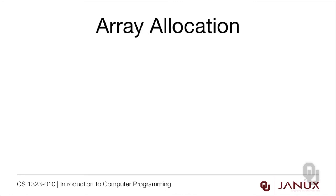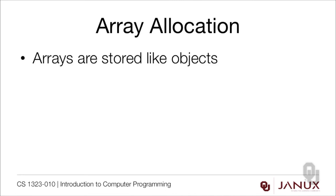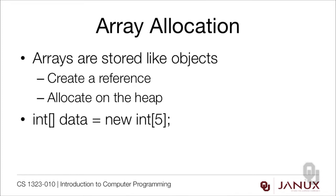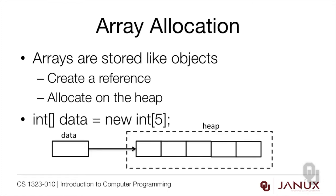So let's take a look at the mechanics of array allocation. Arrays are stored like objects — you create a reference and then you allocate them on the heap using a constructor. Remember constructors always use the word new. So for example: int[] data = new int[5]. This is what this looks like in memory. Data is a reference and then we allocate five places on the heap. These five places are going to hold integers. The arrow between data and the five places on the heap indicates that the reference for data points to that location in memory — the first address is what's sitting in data.